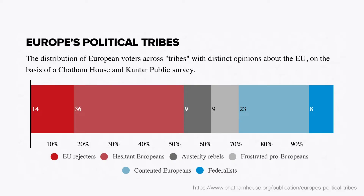A year ago, Chatham House and Cantar Public Survey asked questions to 10,000 people in Europe to understand where they would position on the spectrum of EU rejecters to federalists — how they would approach the European idea. They came up with six segments of population and how these people react. The research itself is extremely interesting because 10,000 people is quite an interesting sample of what happens in Europe.